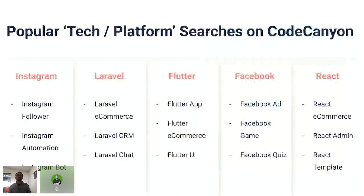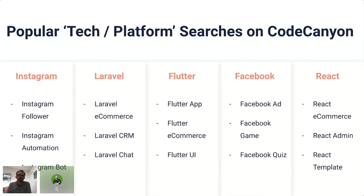I wanted to give you all some additional inspiration for content related to some of these top technology and platform search terms on Code Canyon. You'll be able to review this again at a later date. For social media there are a lot of terms relating to automation, quizzes and games, while technologies focus a lot on e-commerce and CRM solutions. While technology-related searches are important, searches for particular features that people would like to incorporate into a project are key — approximately 40% of all sessions on Code Canyon are people looking for a particular feature. The top five are: CRM, e-commerce, point of sale, chat, and booking. When you pair these with technologies, it really can be an evergreen area of demand. People are always looking for these types of features in the newest and most relevant technologies.